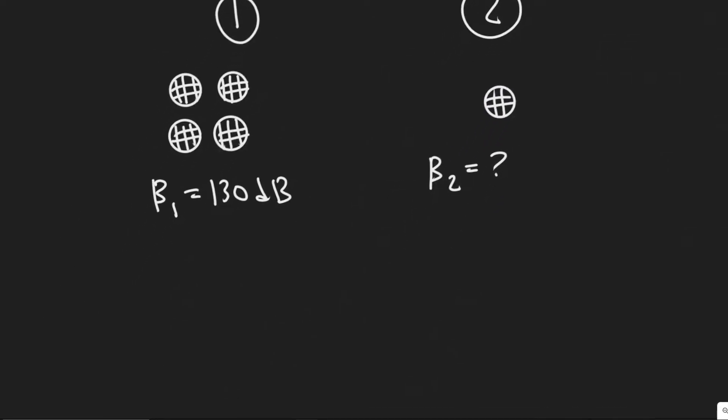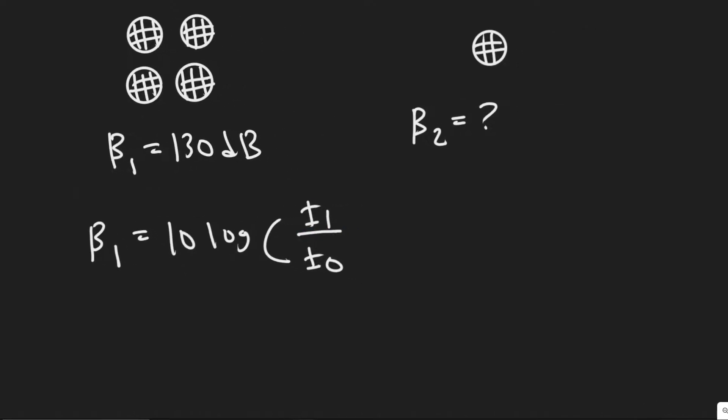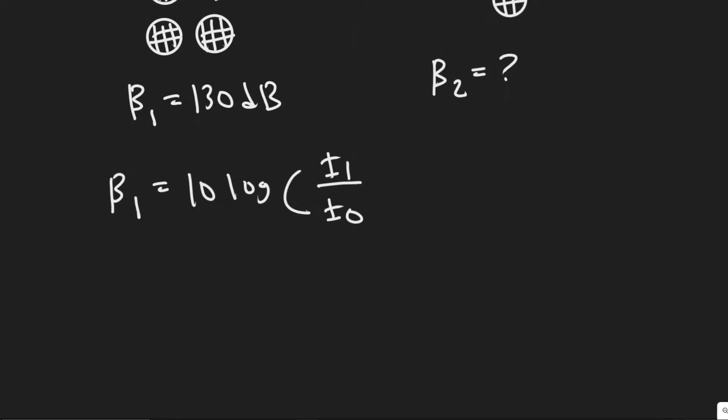The way we're going to do this is by using the formula for the sound level. So beta, the sound level, we'll call it β₁ for scenario one, is 10 log i₁ divided by i₀. i₀ is just the minimum audible intensity, it's just a constant value. The value that is generally used, I'll just write it down here: i₀ is equal to 1 times 10 to the minus 12 watts per meter squared.